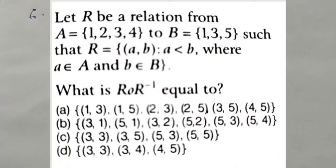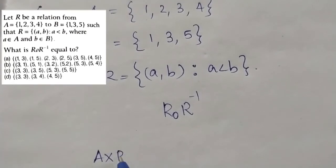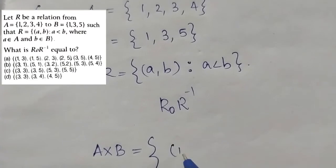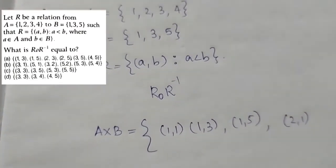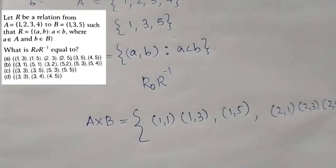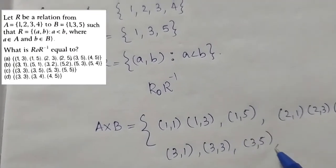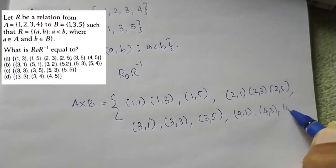Next question: we have sets A = {1,2,3,4} and B = {1,3,5}. We define a relation R where a is less than b. So A×B gives pairs: (1,1),(1,3),(1,5), (2,1),(2,3),(2,5), (3,1),(3,3),(3,5), (4,1),(4,3),(4,5).